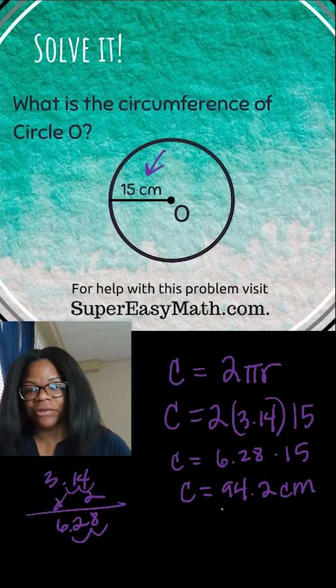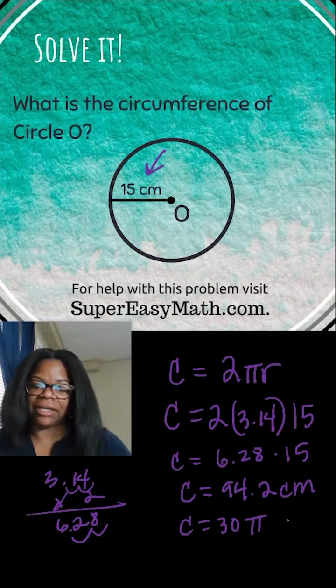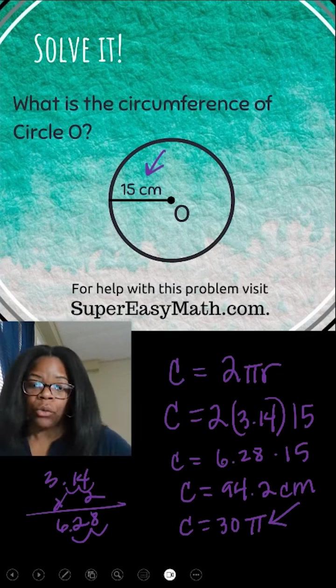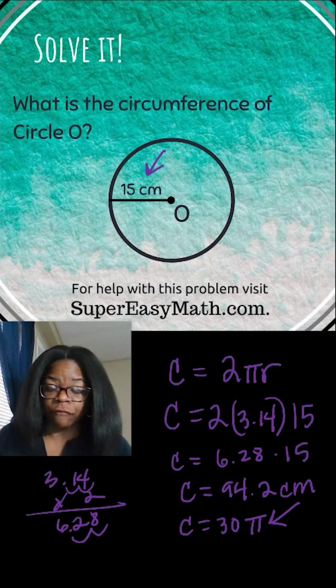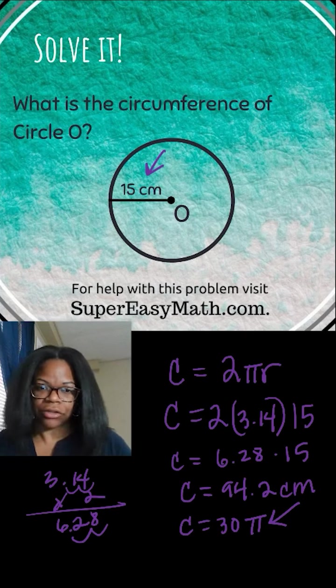Your answer could be C equals 94.2 centimeters, or you can put C equals 30 pi. These have the same value. In fact, the one where the pi is written out as the symbol is more exact. Whenever you use 3.14, you're cutting off some of the value of pi. So when you multiply, you're getting a number that's sort of like an estimation, a rounded answer. It's not as exact as 30 pi written as a symbol.